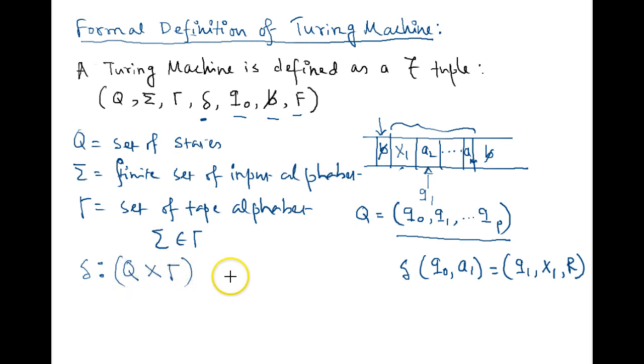cross product with the tape symbol, that means any association of element of Q with any association of tape symbol that actually maps Q cross Gamma to Q cross Gamma cross right or left. That means it can move to right or it can move to left.